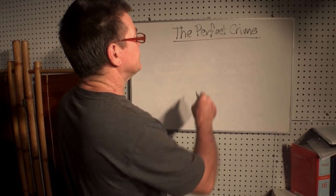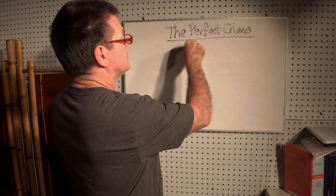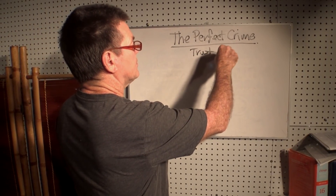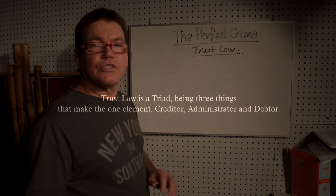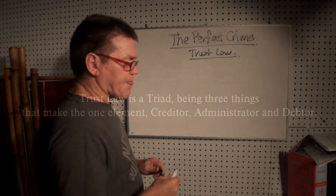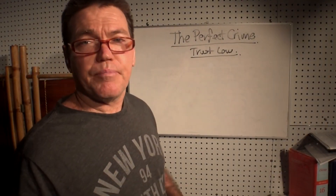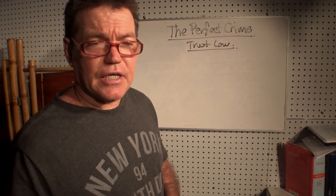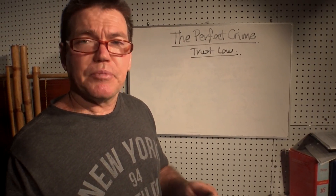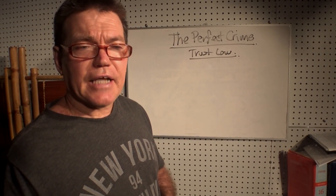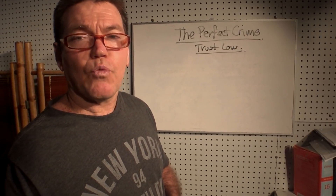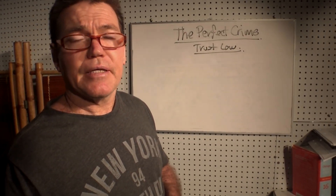Trust law has three elements, and it's usually used in private contracts. It's a very powerful system. Because if there's a contract established between two parties, a third party is present, and it acts as a go-between, but also acts like a witness to the agreement that was made.